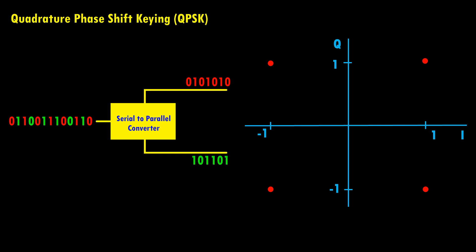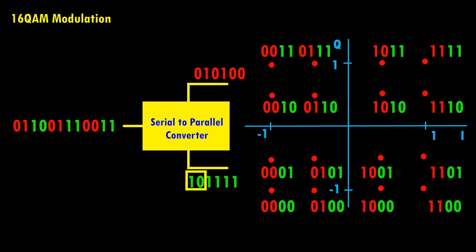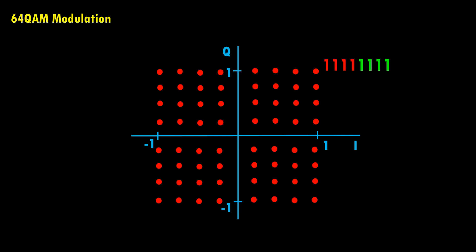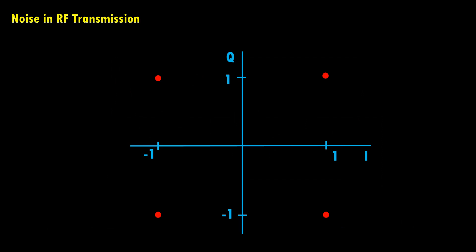Theoretically we can increase the data rate even further if we represent an RF signal waveform with more than two bits. For example, in 16-QAM, two digital bits represent an I signal while two bits represent a Q signal, so four bits in total represent 16 different RF carrier waveforms having different amplitudes and phases. Going further, we can represent 64 RF carrier waveforms with eight digital bits, increasing the theoretical data rate eight times.